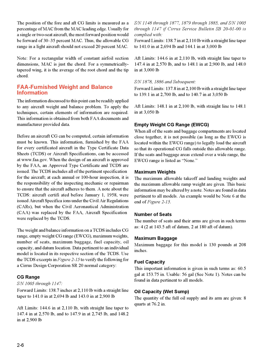Aft limits for SN 1148–1877: 144.6 in. at 2,110 lb, tapering to 147.4 in. at 2,570 lb, 148.1 in. at 2,900 lb, and 148.0 in. at 3,000 lb. For SN 1878, 1886 and subsequent: forward limits are 137.8 in. at 2,100 lb, tapering to 139.1 in. at 2,700 lb and 140.7 in. at 3,050 lb. Aft limits are 148.1 in. at 2,100 lb through 3,050 lb. Empty Weight CG Range (EWCG): when all seats and baggage compartments are located close together, as long as the EWCG is within the EWCG range, it is not possible to legally load the aircraft so the operational CG falls outside the allowable range. If seats and baggage areas extend over a wide range, the EWCG range is listed as none.